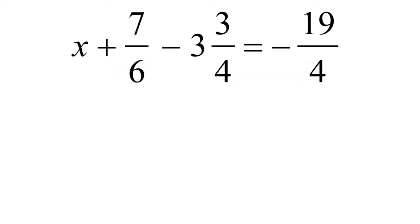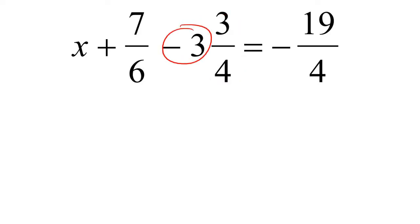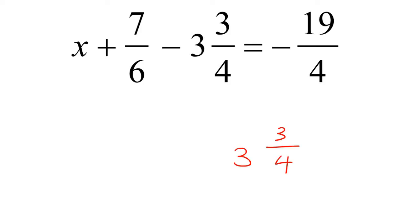There are multiple ways you can do this, but one thing I would suggest is that if you have a mixed number — remember, a mixed number is when you have a whole number and a fraction combined — you should turn that into a normal improper fraction. So just in case you've forgotten, if you have 3 and 3 over 4 and need to turn that into an improper fraction: